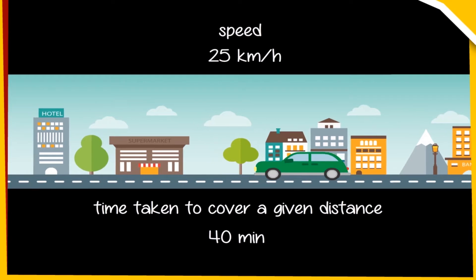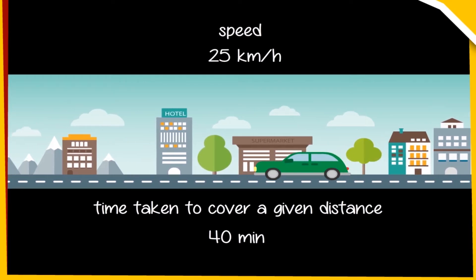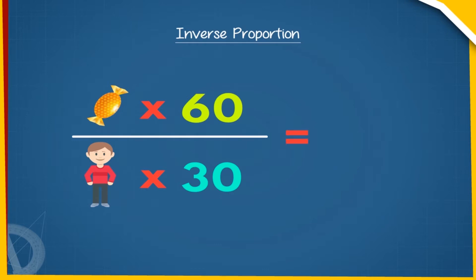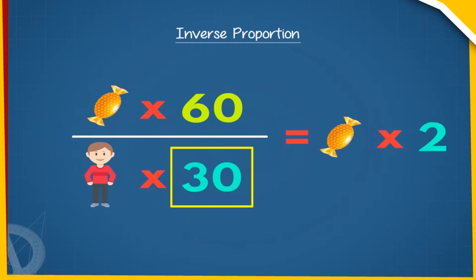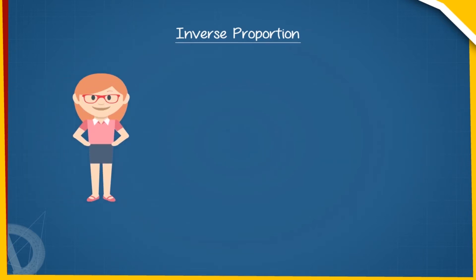We say that x varies inversely with y and y varies inversely with x. Suppose we have 60 toffees and we wish to distribute these toffees equally among a certain number of children. If the number of children is 30, obviously each child will get two toffees. If there are 20 children, each child will get three toffees. Thus, the number of children and the number of toffees each child gets vary inversely.